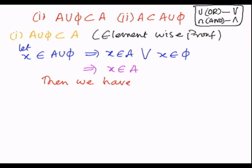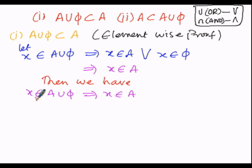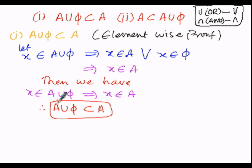We have X belongs to A union φ implies X belongs to A. From this it is clear that the element X belonging to A union φ is also present in set A — the elements in A union φ are also elements of A. Therefore A union φ is a subset of A. Let us consider this as equation number 1.